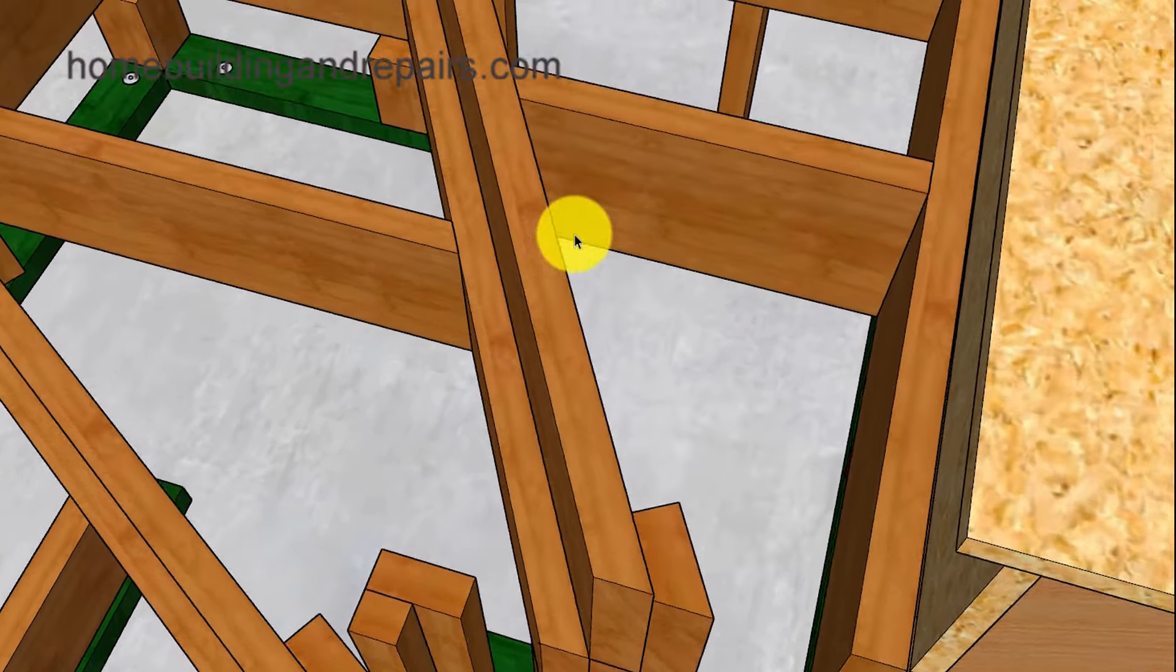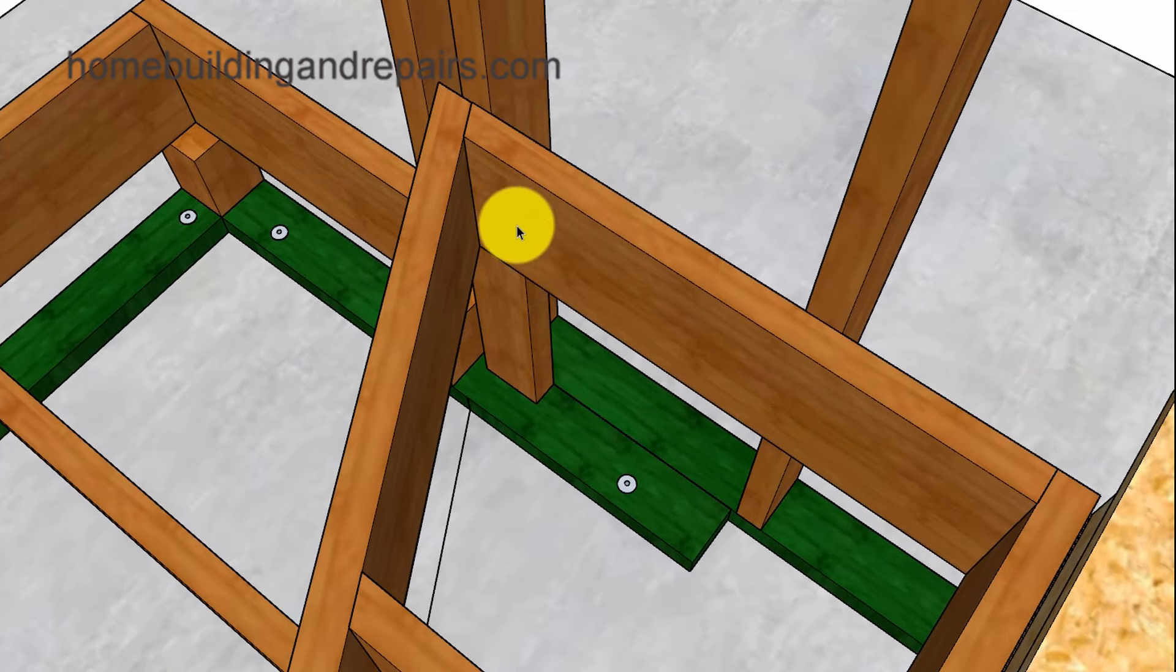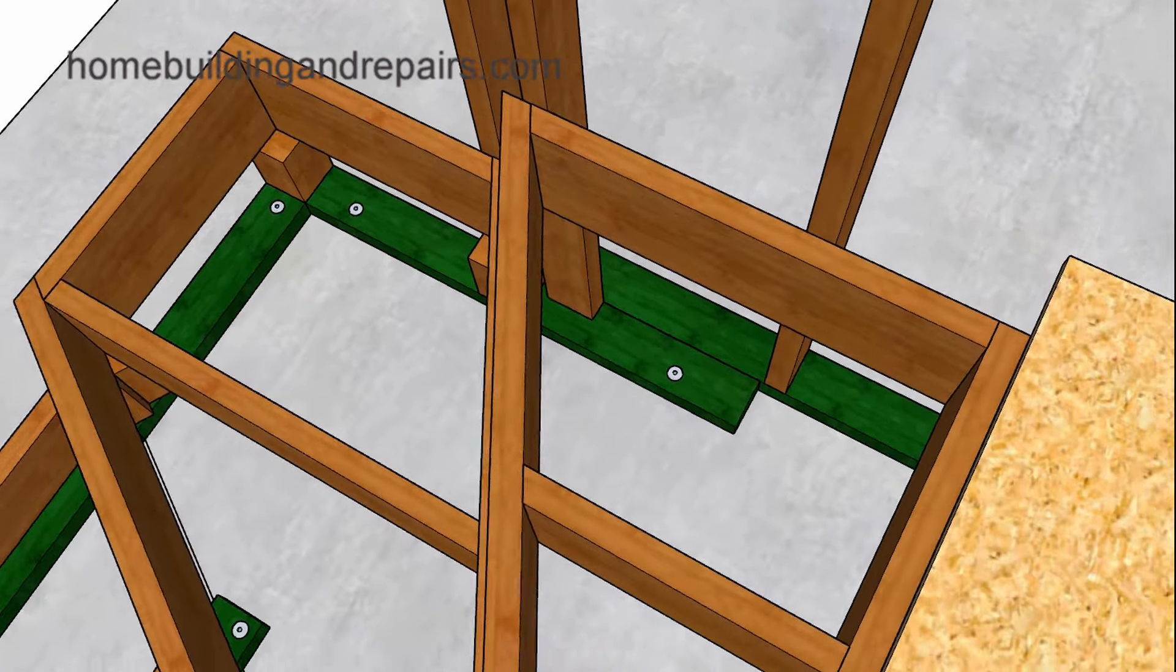Next up let's go ahead and take a look at how the edge board here or rim joists is supported by the 2x4. And then of course you can nail this board into the wall framing studs. Let's go ahead and pan out here.